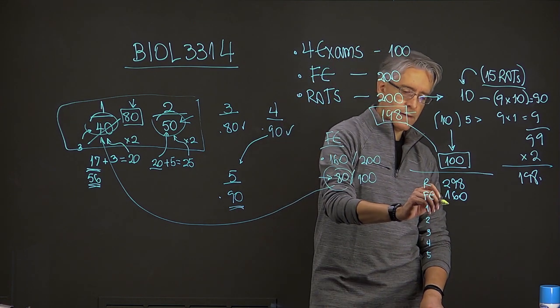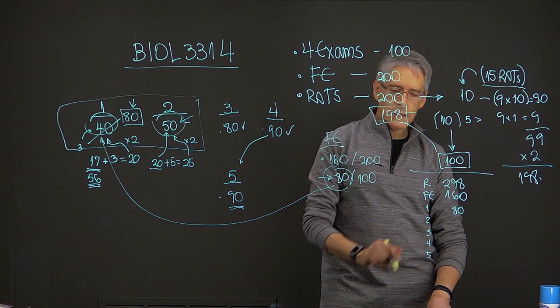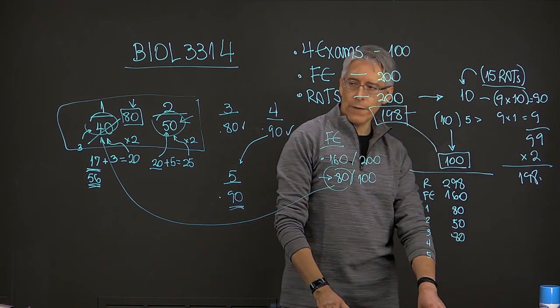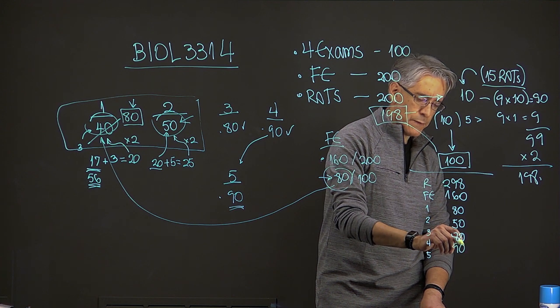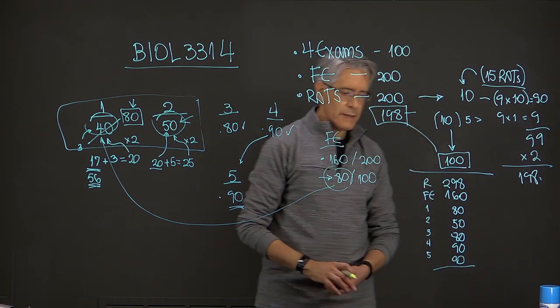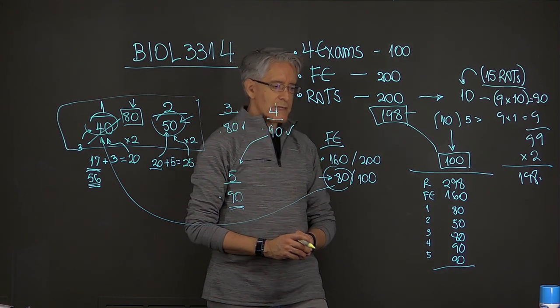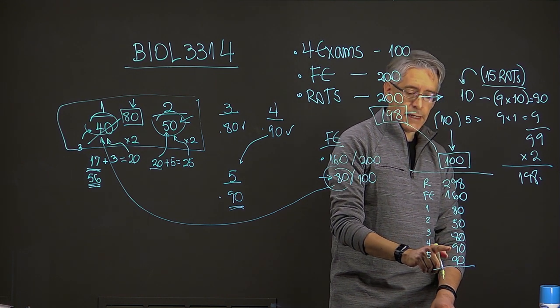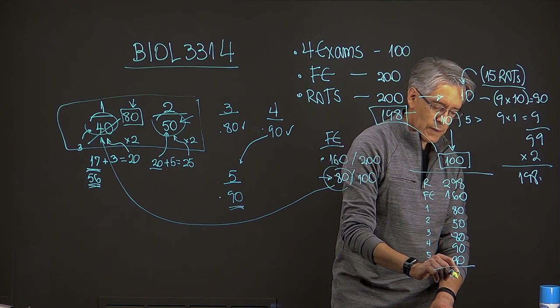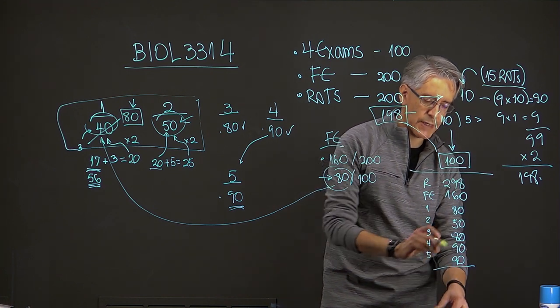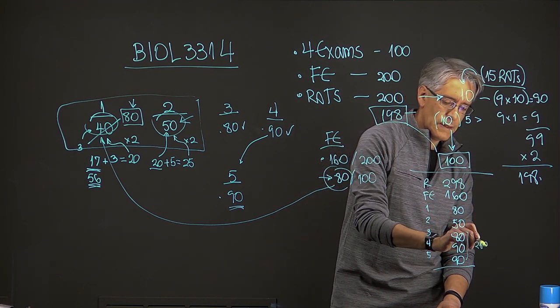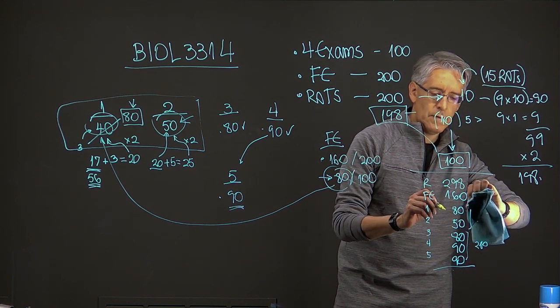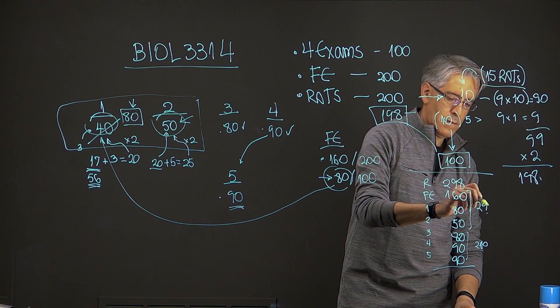So exam one, again, it got turned into an 80. Exam two, still a 50. It's the worst grade out of all of them. Exam number three is an 80. Exam number four is a 90. Exam number five is another 90. So those are the grades that this student has now at this point. And that adds up to 260, 130, which combined with this would be 290, and 298.